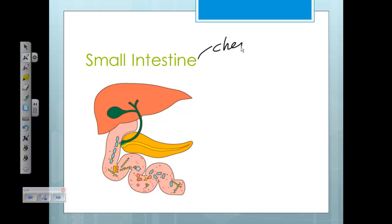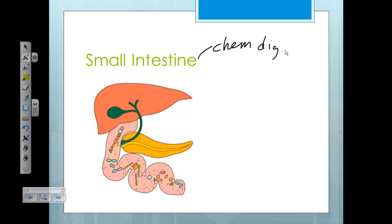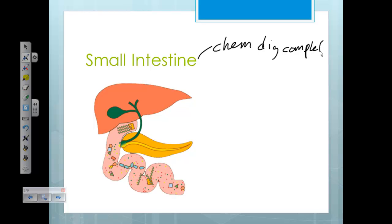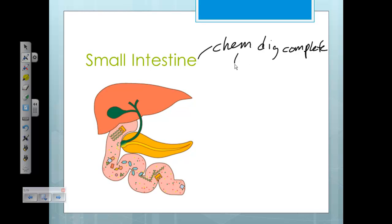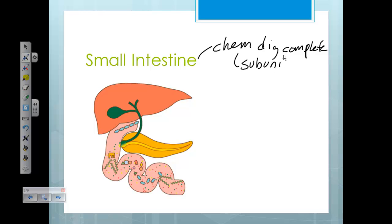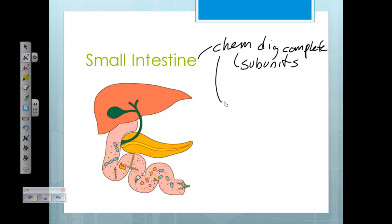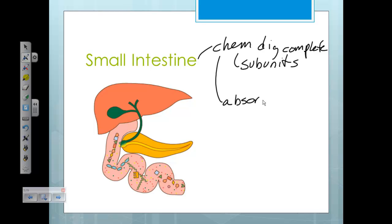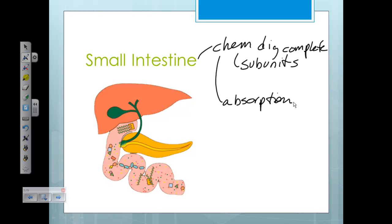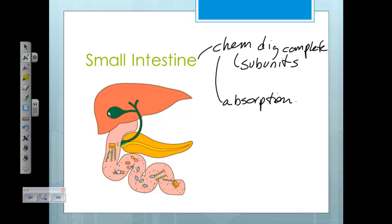In the small intestine, two things are going to occur: chemical digestion is going to be complete, so all our food is going to become small subunits. As well, once chemical digestion is complete, absorption of our nutrients occurs here.